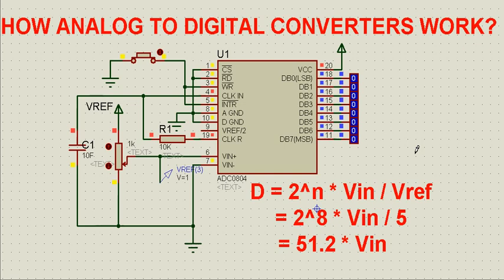Here you can see the model of the ADC is ADC0804, and this is an 8-bit ADC. As you can see, the number of bits in this digital output code is 8.